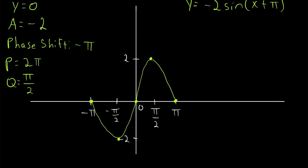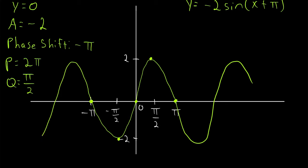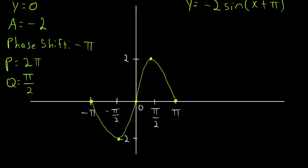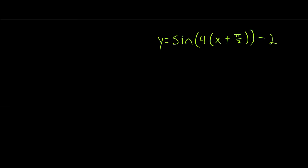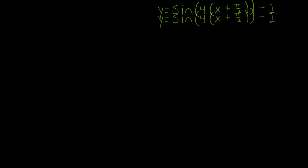And this period of our function looks something like that. Of course, you could sketch some more of it by hand, or find more key points. Once you've done one period, it's pretty smooth sailing if you want to do another one. Next example — we've got another sine function.